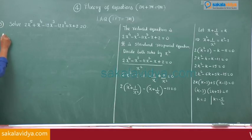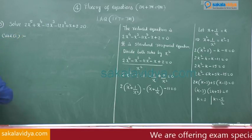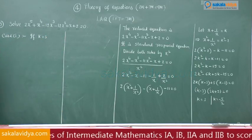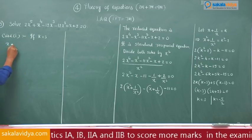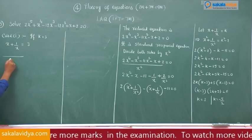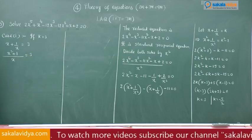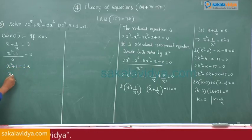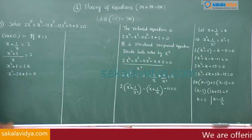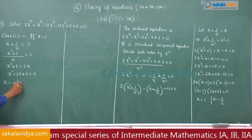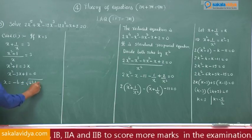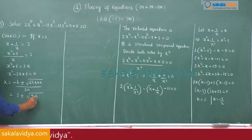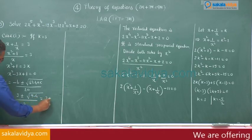Case 1: if k equals 3. Then x plus 1/x equals 3. Taking LCM, x² plus 1 equals 3x, so x² minus 3x plus 1 equals 0. Using the quadratic formula, x equals (3 ± √(9 minus 4)) / 2, that is x equals (3 ± √5) / 2. Case 1 is completed.